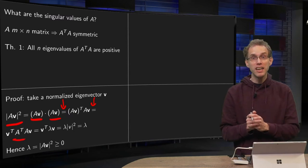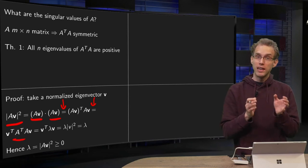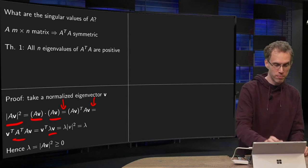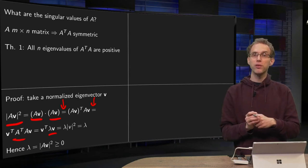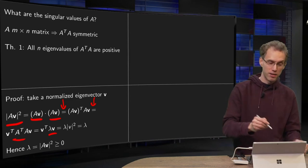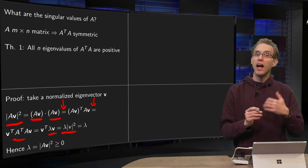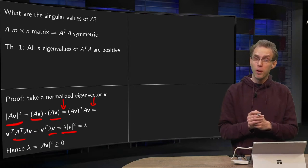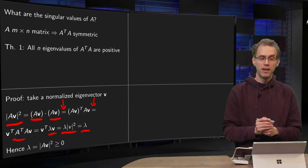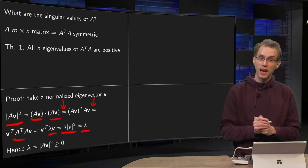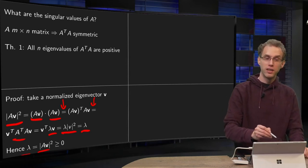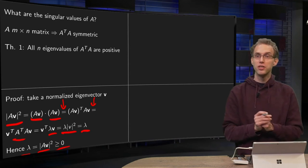Since V was an eigenvector of A transpose A, we have A transpose A times V equals lambda times V. Substituting, we get lambda times V transpose times V, which equals lambda times the norm of V squared. Since we started with a normalized eigenvector, the norm of V squared equals 1, so we end up with lambda. Therefore lambda equals the norm of AV squared, which is of course non-negative.